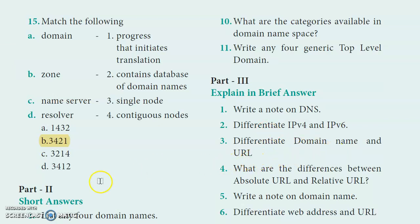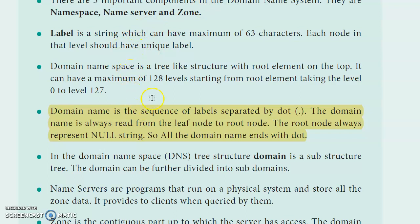Differentiate domain name and URL. The domain name is a sequence of letters separated by dots, and we always read it from leaf node to root node. In the root node, it represents an address string, and all domain names end with a dot.